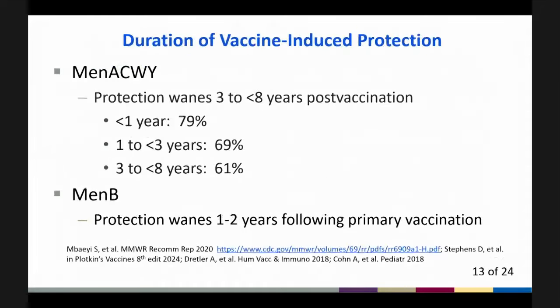Now to discuss duration of vaccine-induced protection. Protection wanes over time following meningitis vaccination. For MenACWY vaccines, protection wanes between three and eight years post-vaccination. Within one year of vaccination, vaccine effectiveness is 79%. Between one and three years post-vaccination, vaccine effectiveness is 69%. Between three and eight years post-vaccination, vaccine effectiveness is 61%. For MenB vaccines, protection wanes one to two years following primary vaccination.